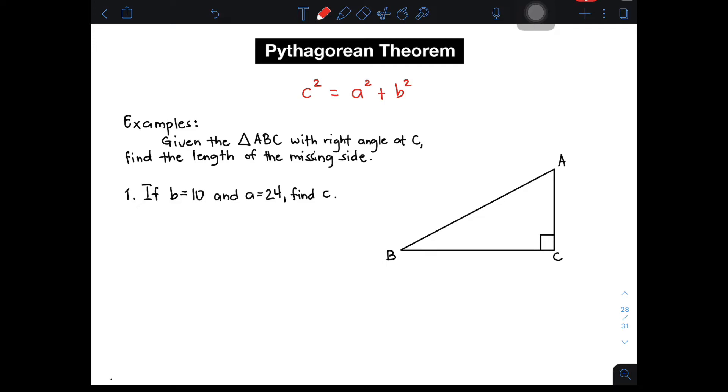Now, paano natin mayalaman ngayon if saan yung location ng ating A, B, and C? So, dito, since meron tayo dito ang angle B, automatic, the opposite side, the side opposite to your angle B is your side B, which is equal to 10 units. Now, for the side A naman, with regards to your angle A, yung side opposite to your angle A is considered as side A, which is equal to 24 units.